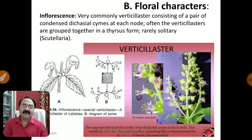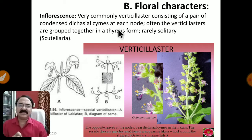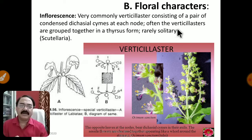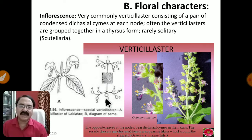The most important floral characteristic of this family is the verticillaster type of inflorescence. It consists of a pair of condensed dichasial cymes at each node. Often the verticillasters are grouped together in a thyrsus form. Rarely they are solitary — for example in Scutellaria. At each node there is a cymose type of dichasial inflorescence, where each time the tip is divided.